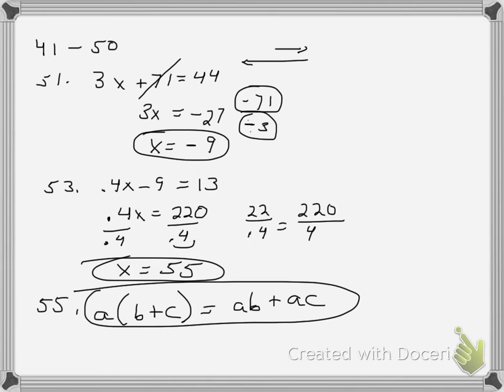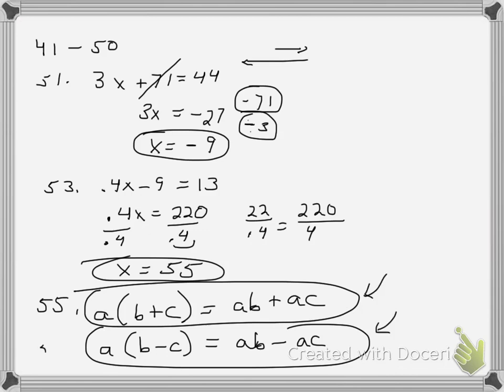Write the equation of the distributive property of multiplication over subtraction would be the very same, except that now it's subtraction here and subtraction here. So you should note that. Distribution over addition and over subtraction for number 56. All right, thank you.